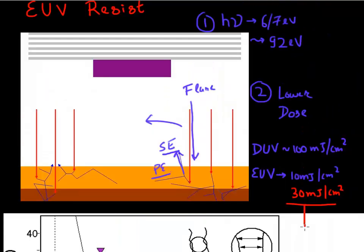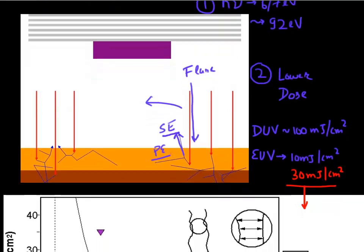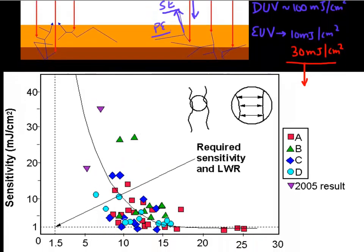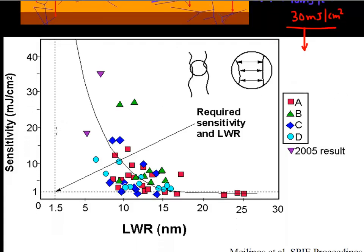And it's not very hard to postulate why that would be the case, why your sensitivity and your line width roughness will go inverse to each other. And this experimental data shows that sensitivity in fact is inversely proportional to your line width roughness.